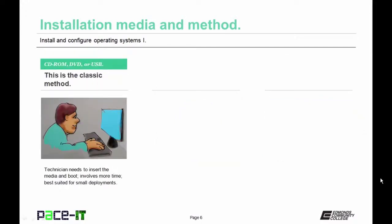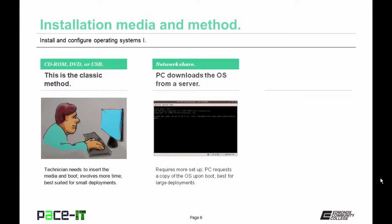For installation methods: physical media is the classic method — power up the system, install the disk, and wait. The technician needs to have the media; this is best for small deployments. For network deployment, the PC downloads the operating system from a server — this requires more setup and hardware. The PC fires up and requests a copy of the OS upon boot attempt; this is best for larger deployments. With an image, the standard image is used in multiple cases and can speed up larger deployments since all images are the same.